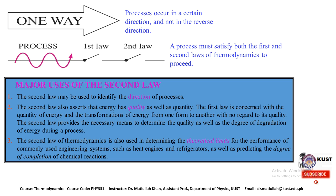Now considering one-way processes: there are processes that occur in a certain direction and do not occur in the reverse direction. For a process to proceed, it must satisfy both the first and second law of thermodynamics. The major uses of the second law include identifying the direction of processes — in which direction the system will move.